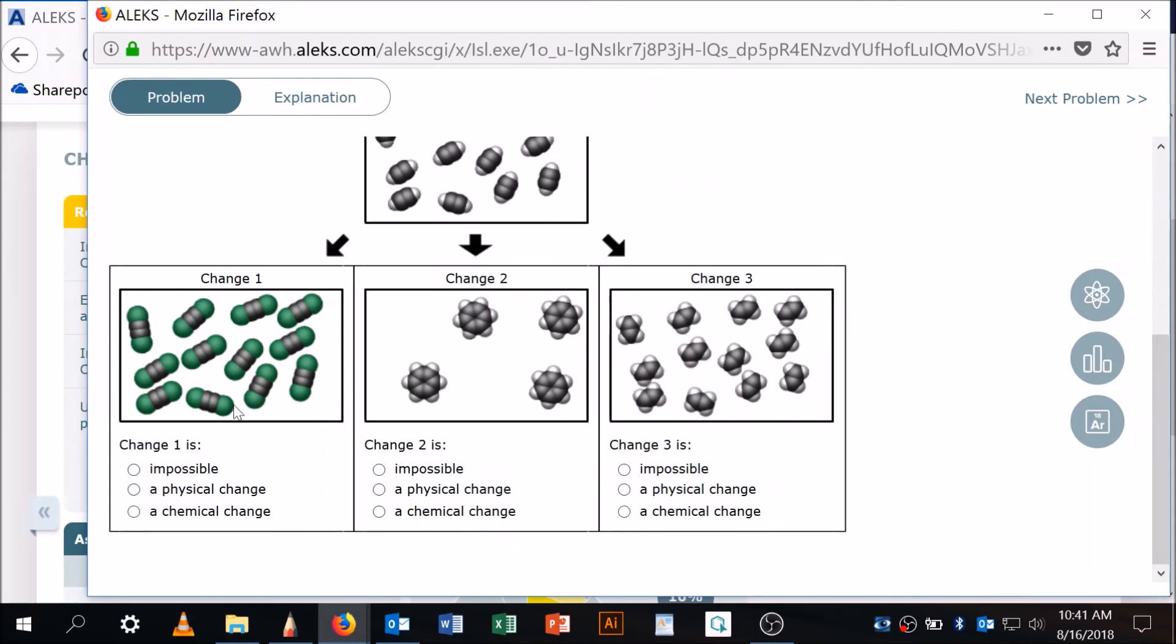All right, so this is impossible because we're changing atoms. This is possible because we have the same atoms in it, and it's the same ratio. So it's also possible, and that makes it a chemical change because we don't have the same connectivity, different bonds. Here, this is impossible because we have a different ratio.